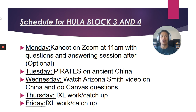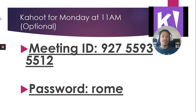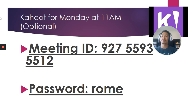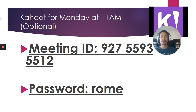Everything else is pretty much the same. Again, it's optional — all Blocks 1, 3, and 4 are welcome to do the Kahoot and the Q&A. The difference for Block 3 and 4 compared to Block 1 is you're doing Pirates instead. You might want to screenshot this — here's the meeting ID for the 11 a.m. Kahoot Zoom meeting. The password is 'Rome' — so again, meeting ID 927-559-35512, password: Rome (lowercase). Again, optional, but it would be really great to see you guys.